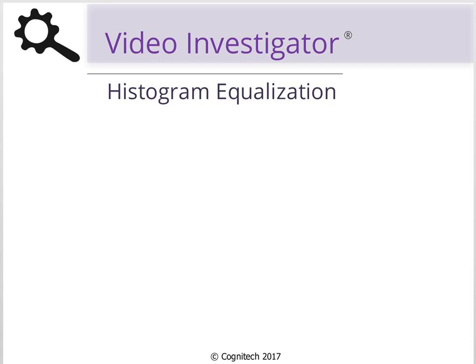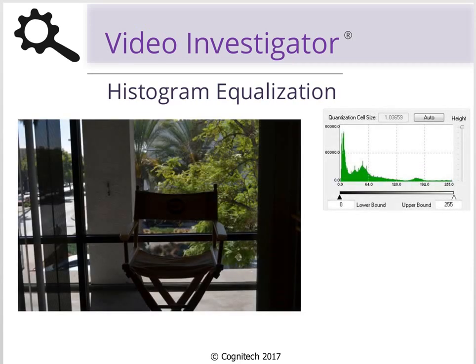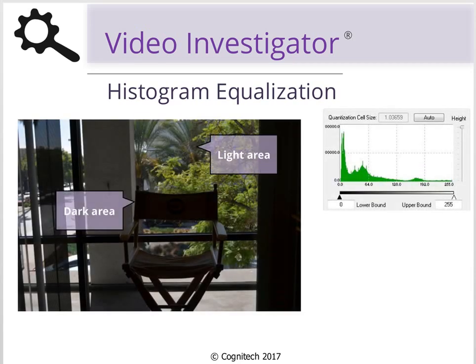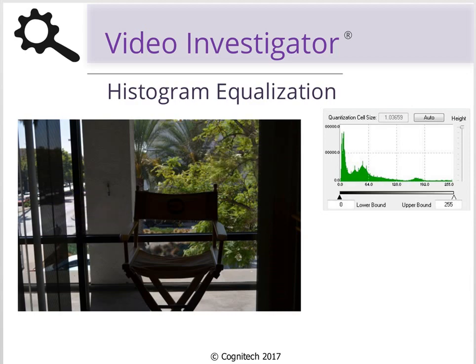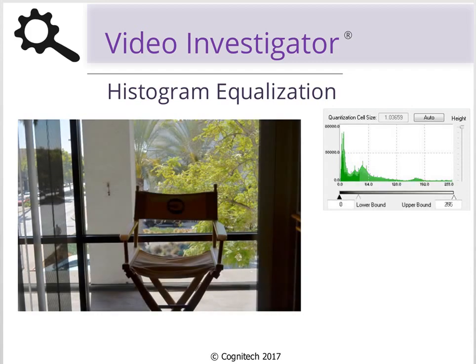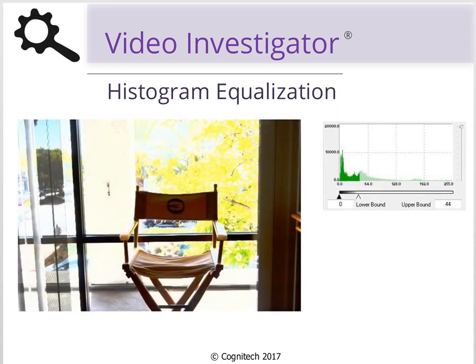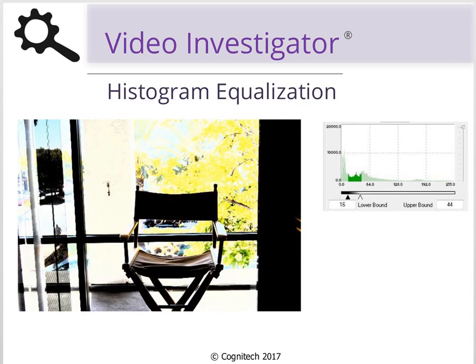Adjusting the bounds of an image's histogram is a quick way to enhance areas in an image that are too dark or too bright. However, it becomes increasingly difficult to evenly adjust the tone of an image that has areas that are both bright and dark by adjusting histogram bounds alone. In this image, adjusting the upper bounds to the point that the design on the chair is visible completely washes out the image in the window, and adjusting the lower bounds only further limits the visibility of the chair.